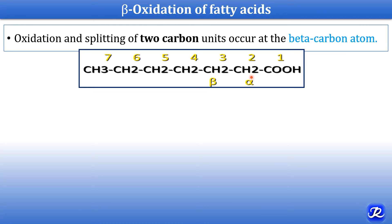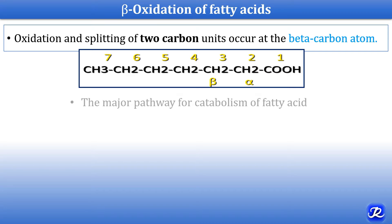This is the fatty acid chain and the numbering of carbon atoms starts from the carboxylic end. So this is carbon 1, 2, 3, 4, 5, 6, and 7. The second carbon is also represented as alpha carbon and the third carbon is beta carbon. So oxidation and splitting occurs at the beta carbon, and that is why it is called beta oxidation of fatty acids.